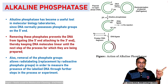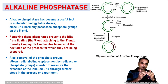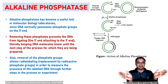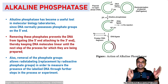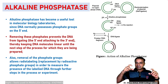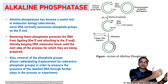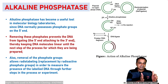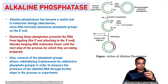Removing these phosphates prevents the DNA from ligating — the 5' end is not allowed to attach to the 3' end, keeping the DNA molecule linear rather than circular. It helps keep the DNA molecule linear until the next step. Also, removal of the phosphate allows radio labeling. In most studies, we need to trace whether the gene of interest is inserted using radioisotopic studies, X-ray crystallographic studies, or gel electrophoresis, using fluorescent or radioactively labeled compounds to detect the DNA.